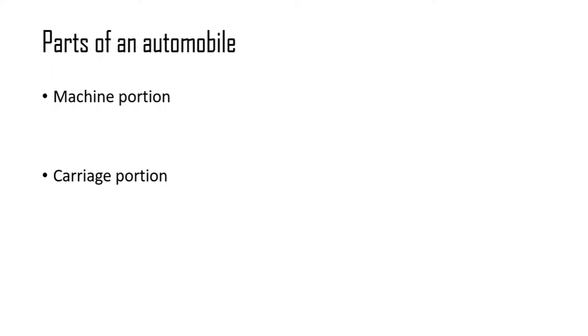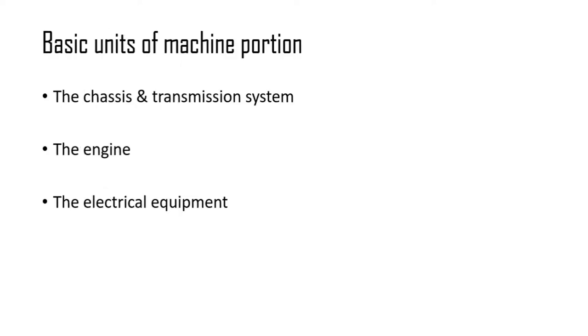Now let us move on to the parts of an automobile. Basically, the classification is into two parts: the machine portion and the carriage portion. Further, the machine portion is divided into three groups: the chassis and transmission system, the engine, and the electrical equipment. Let us understand each one by one.